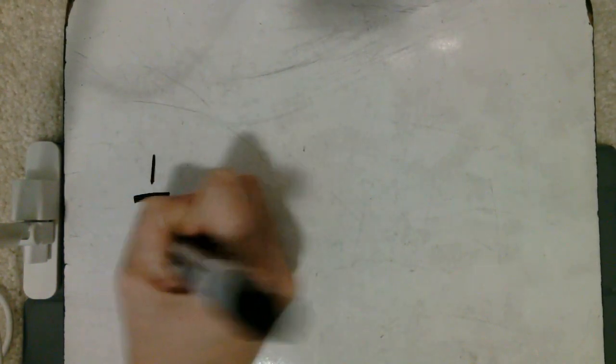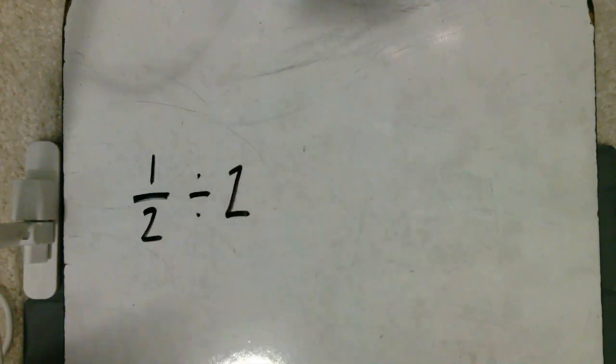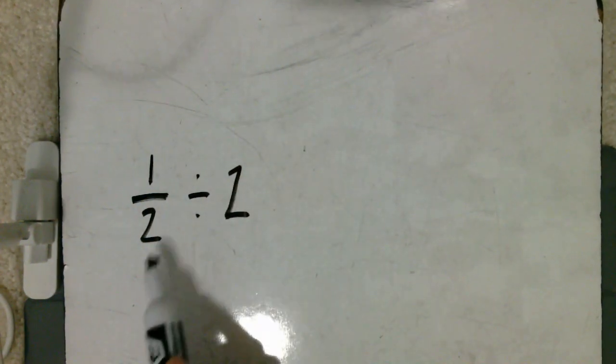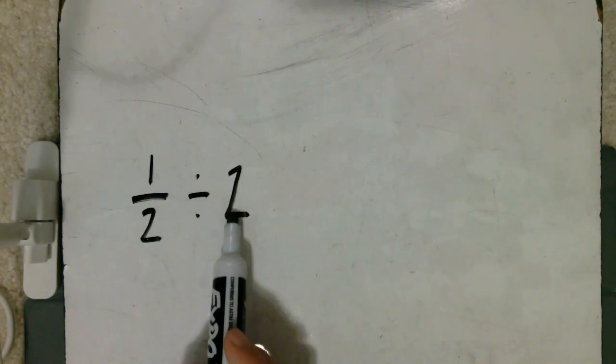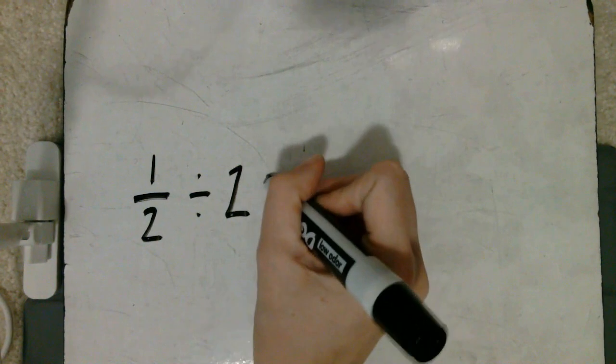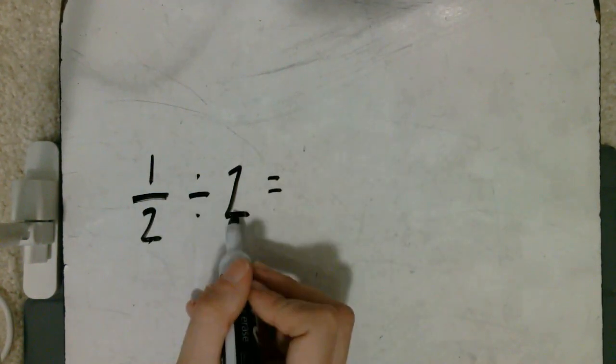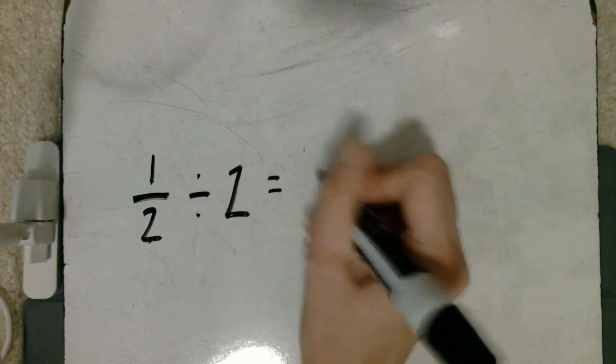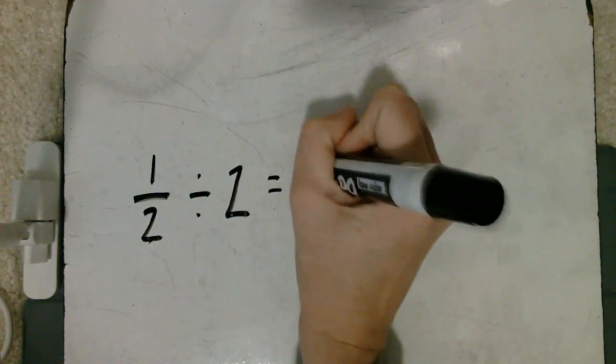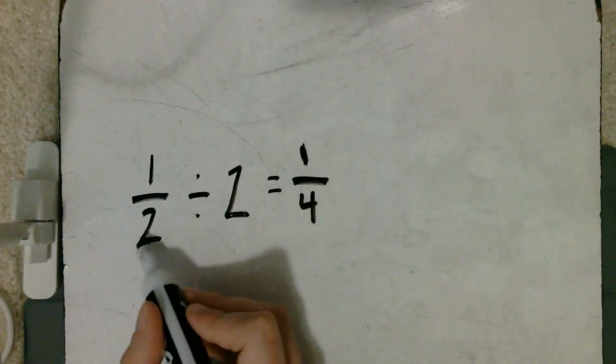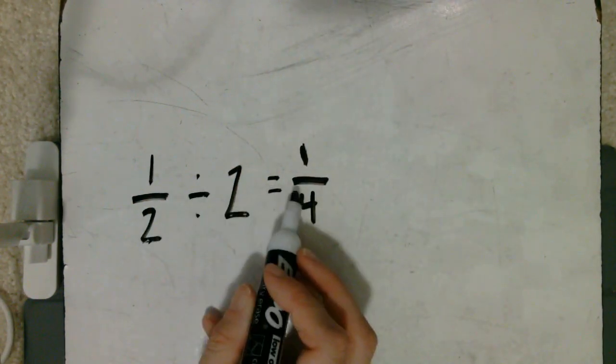For our first activity today, you will each need your own whiteboards and markers. This activity will review material from our previous lesson. Write the following equation on your board: one half divided by two. Say the division sentence with me: one half divided by two. If we solve this problem, one half divided by two equals one fourth. Say this division sentence with me: one half divided by two equals one fourth.